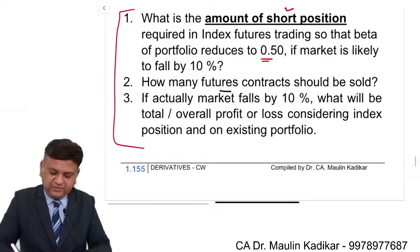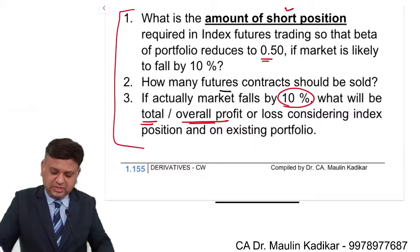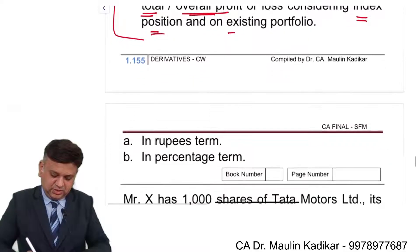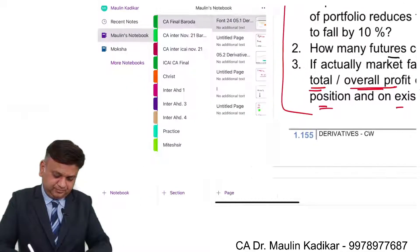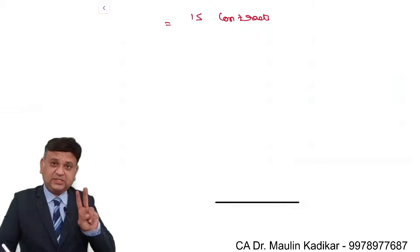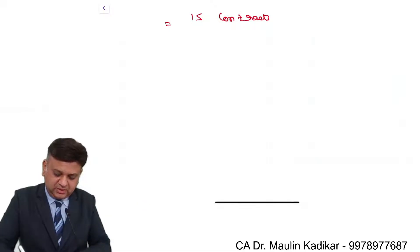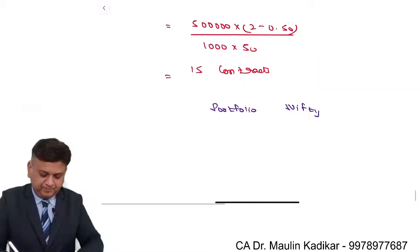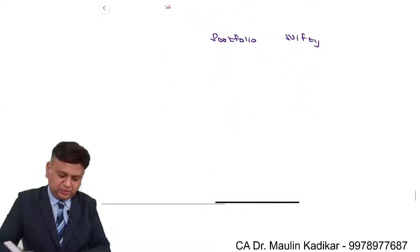Next, if actual market is falling by 10%, what will be total or overall profit or loss considering index position and on existing portfolio in rupees term and percentage term? So we understand that there are two things: one is Nifty, that is the market, and another is portfolio. We already have entered into the short position.